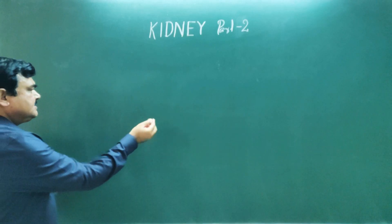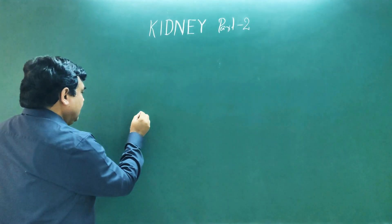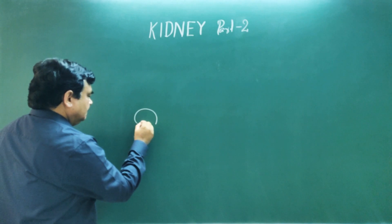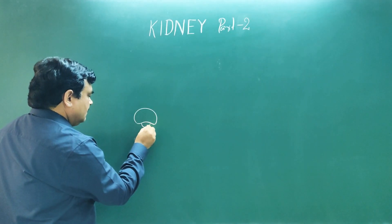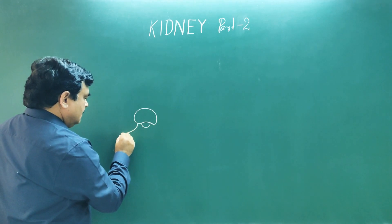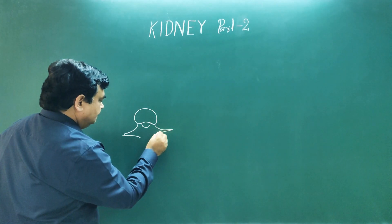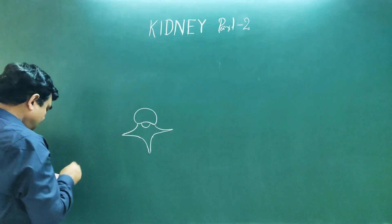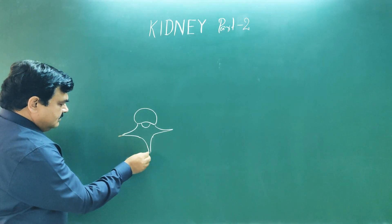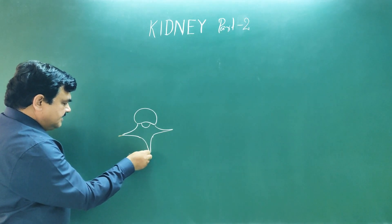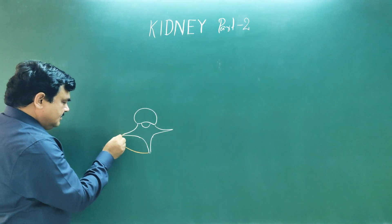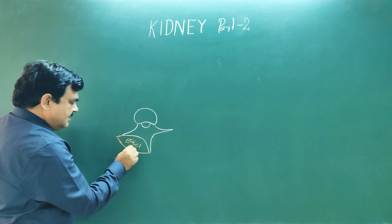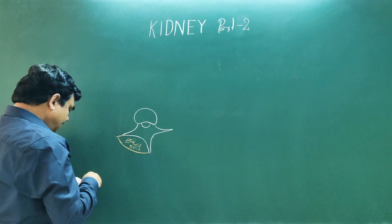If you cut a transverse section which passes through the level of the kidney, you will find here is this lumbar vertebra. Here is the position of erector spinae muscle. This is erector spinae muscle. It is covered by fascia here.